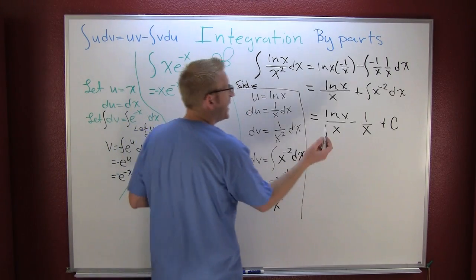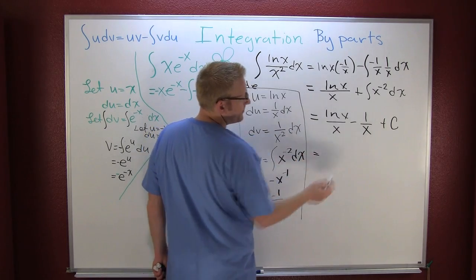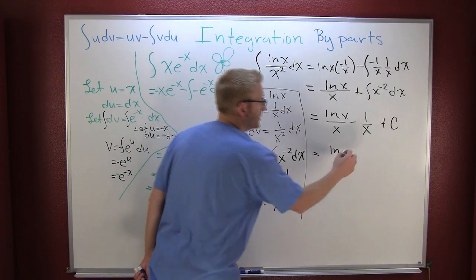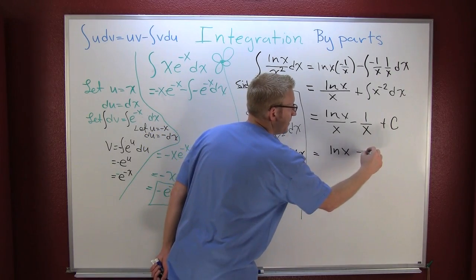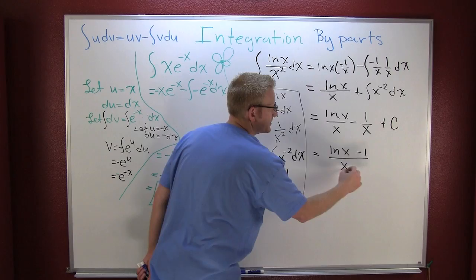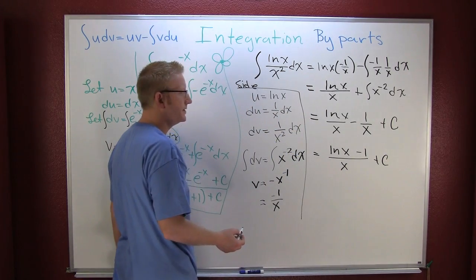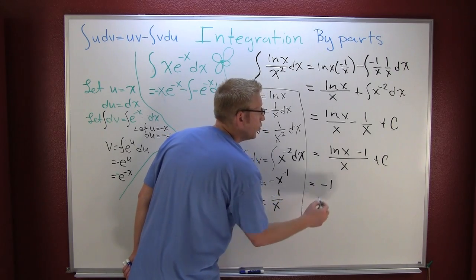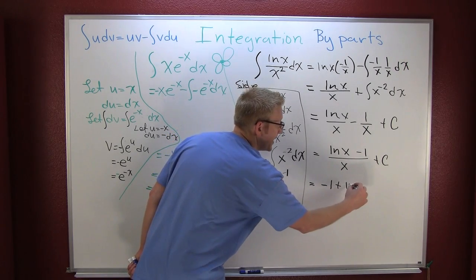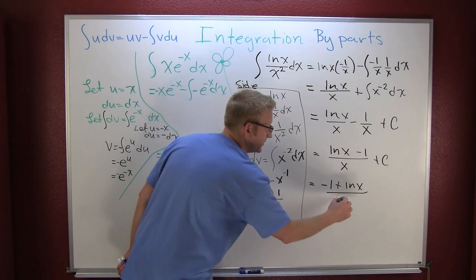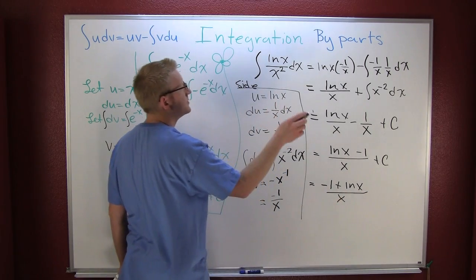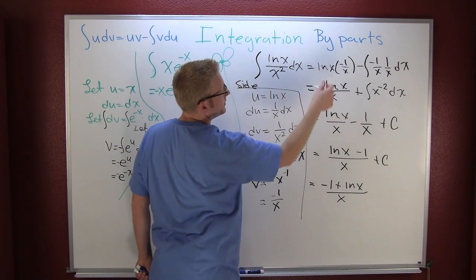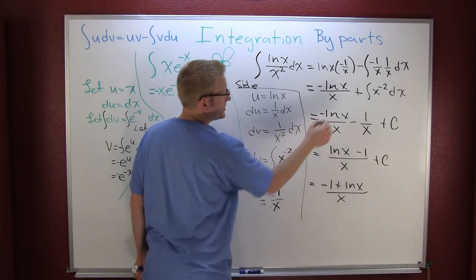I guess I could leave it like that, but if I got the same base, I can add them, or the same denominator. Natural log of x minus one all over x plus c. And for clarity, I'm gonna write that as one plus the natural log of x all over x. Should have been a minus on that one, a minus out there and a minus right there.